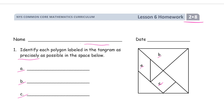What we mean by precisely is to give the most specific name for the shape. A lot of shapes have more than one name — for example, a rectangle could also be called a quadrilateral, a polygon, a parallelogram, or a trapezoid. But if it has four square corners, it's a rectangle, so call it a rectangle.